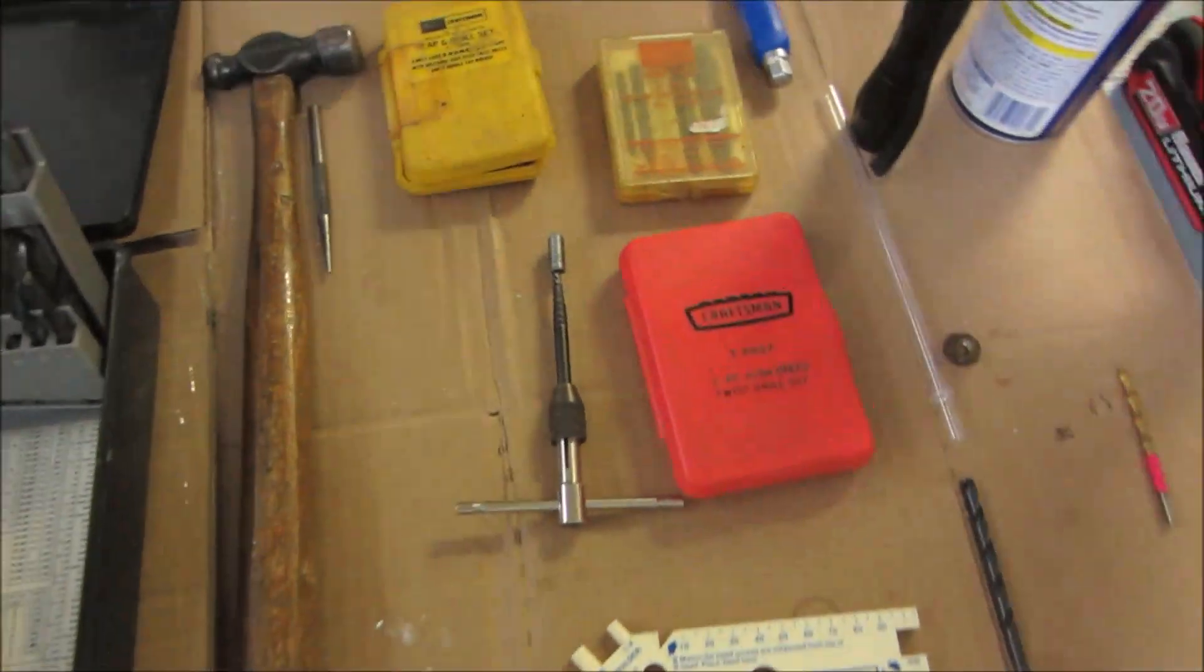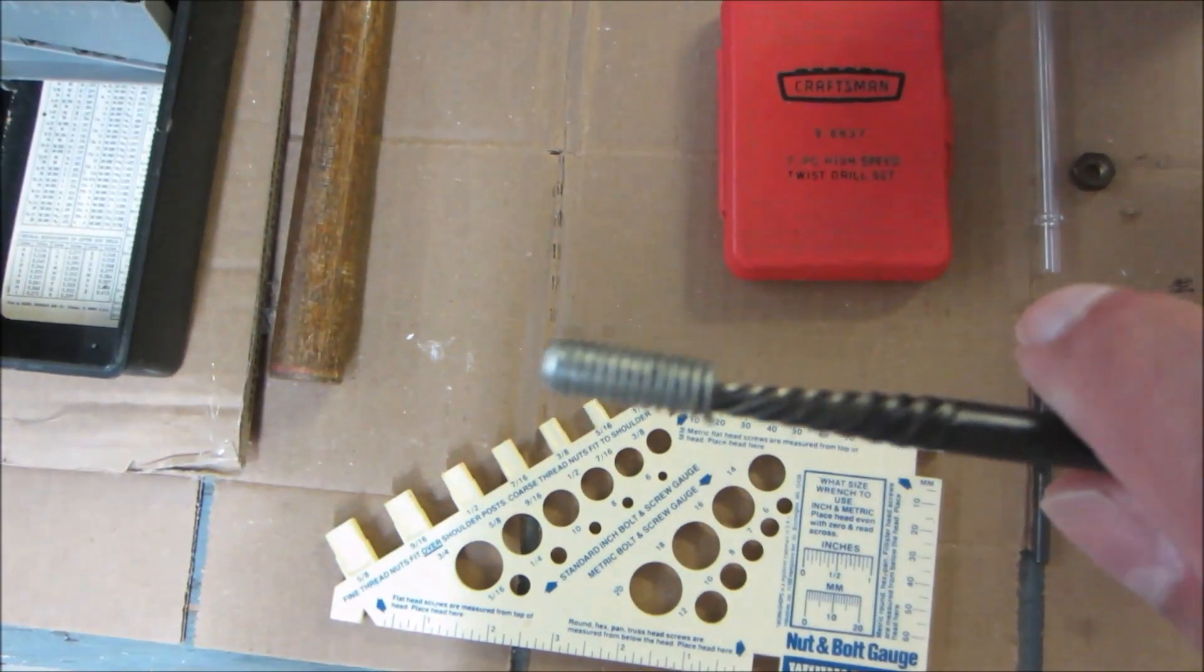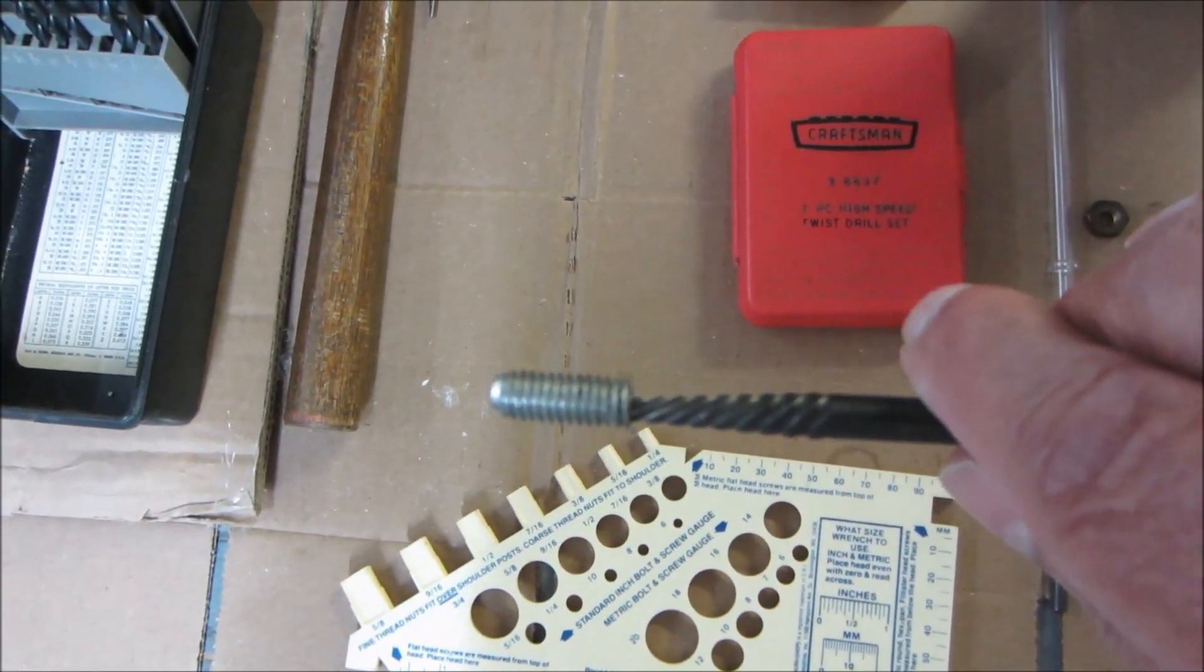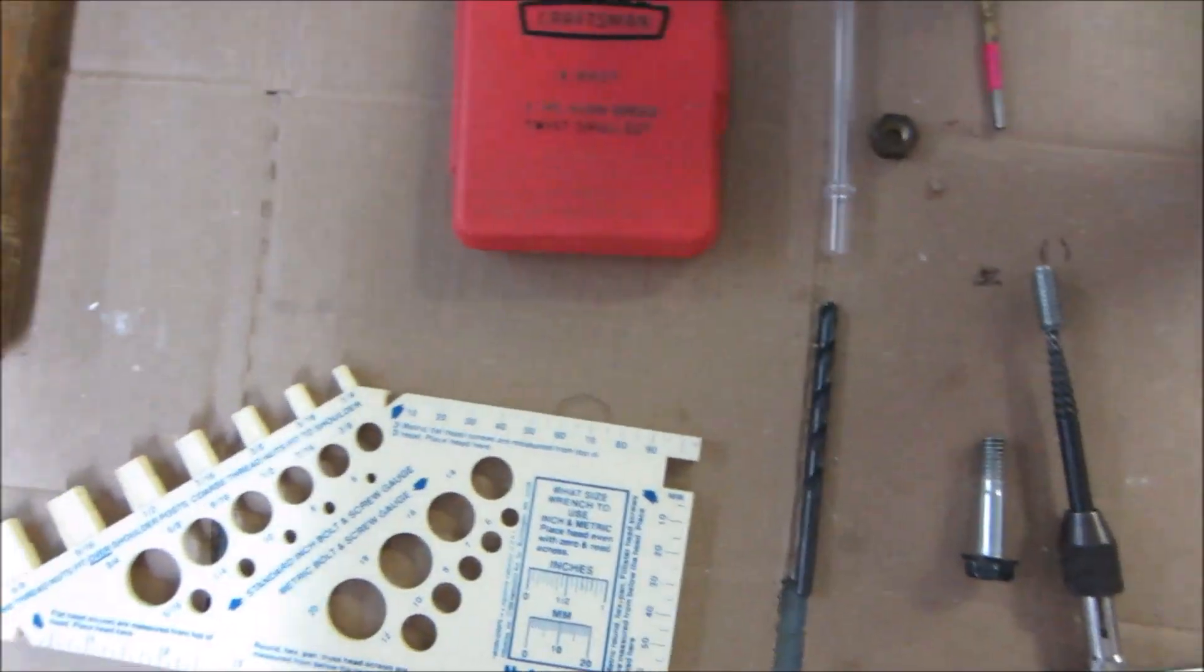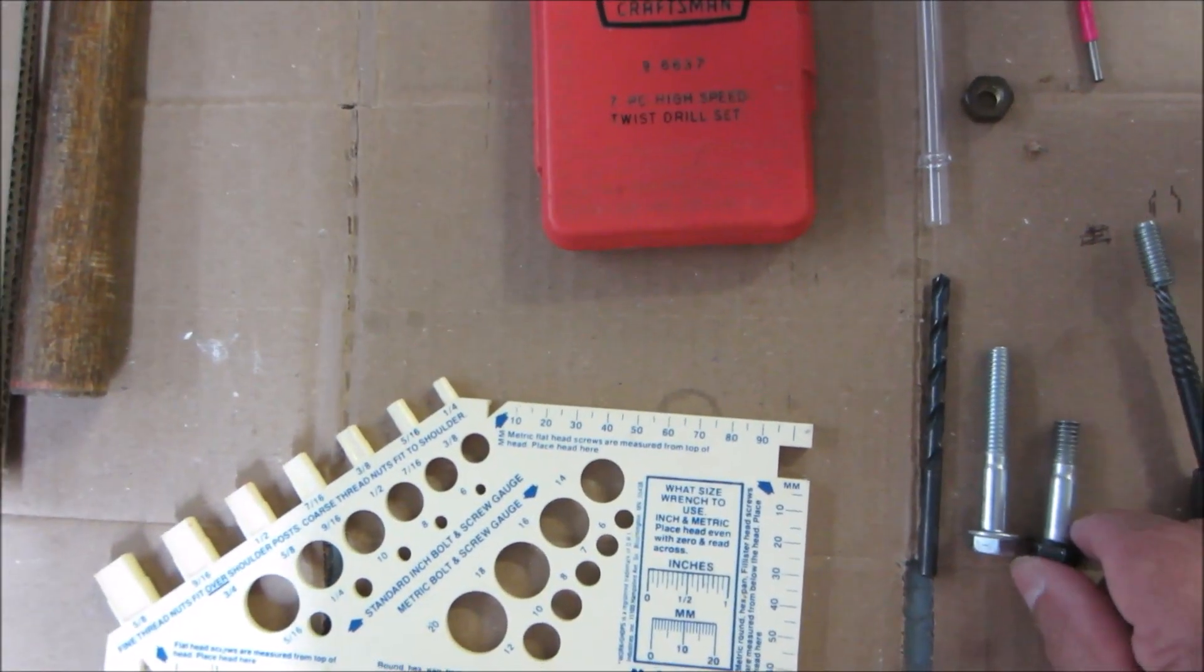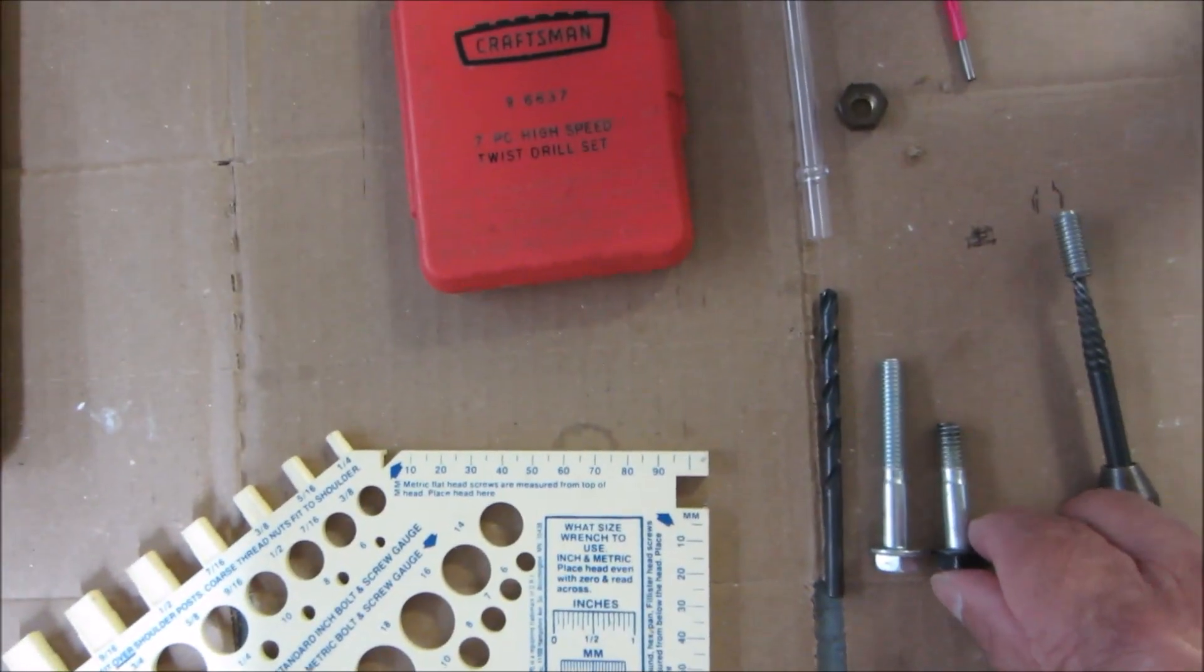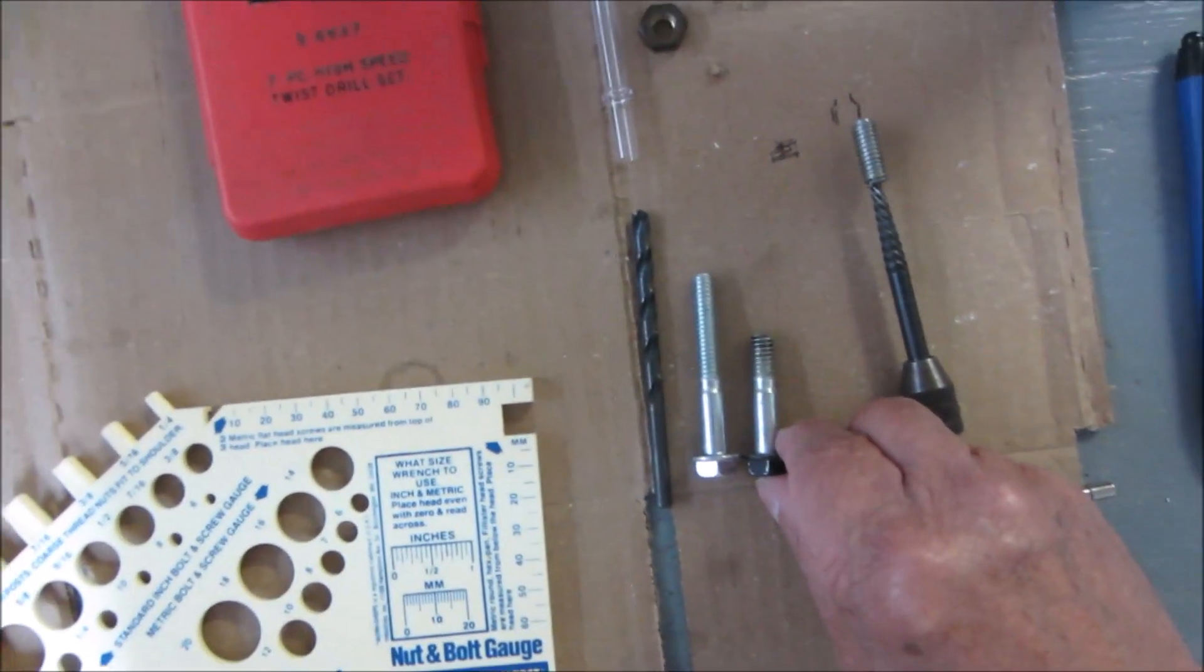Now the first thing you have to do - by the way, I didn't know it at the time but that's the length of threads that was stuck in the hole. Here's a new bolt. So that's our first hurdle. We don't know how much is in there. So you don't know how deep to drill. You don't know what size drill to use.